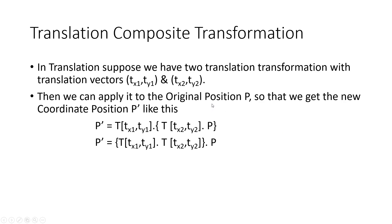Now, Translation Composite Transformation. Let's say you have more than one transformation. We have already learnt about translation transformation — if you don't know it, I will put a link in the description. What happens if you have more than one translation transformation? Let's say we have two translation vectors: Tx1 and Ty1 for the first, and Tx2 and Ty2 for the second. We can apply both to the original position P to get the new coordinate position P'. You can either perform one translation at a time, or you can form the translation composite transformation by multiplying the two matrices together and then applying the result to the original coordinate position.